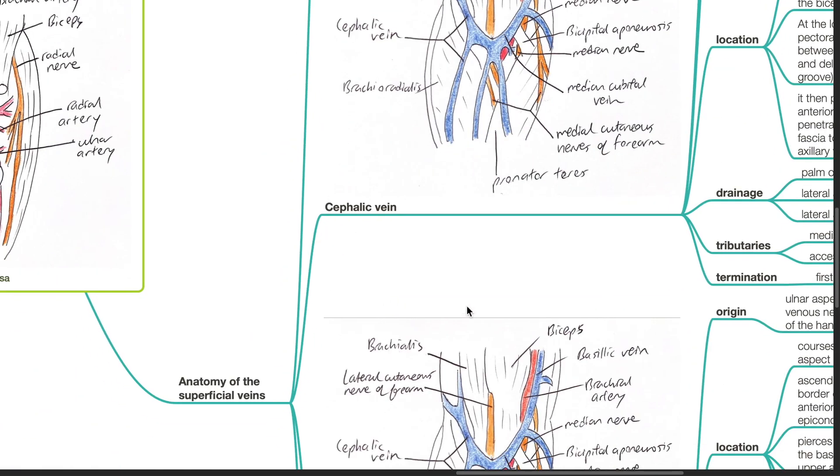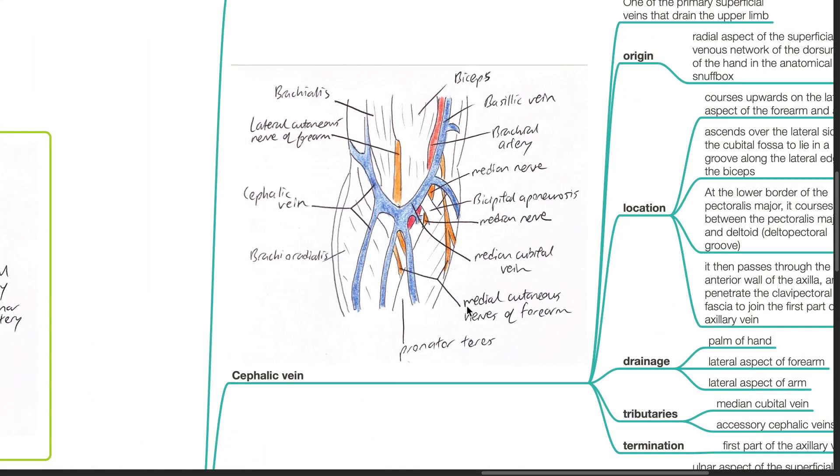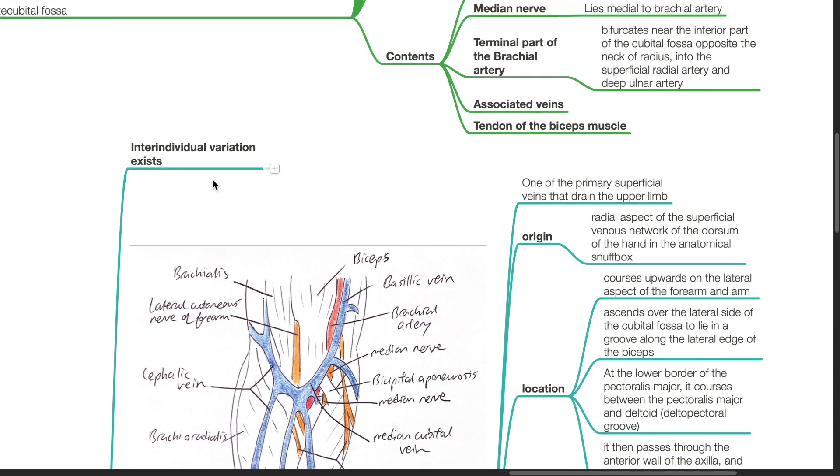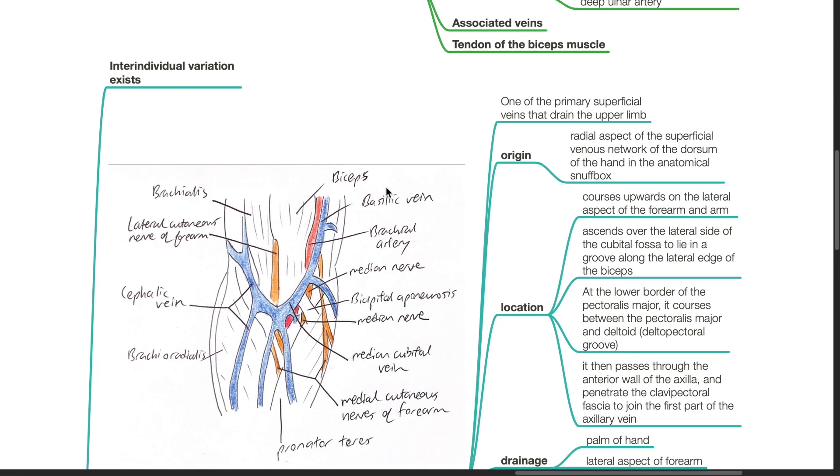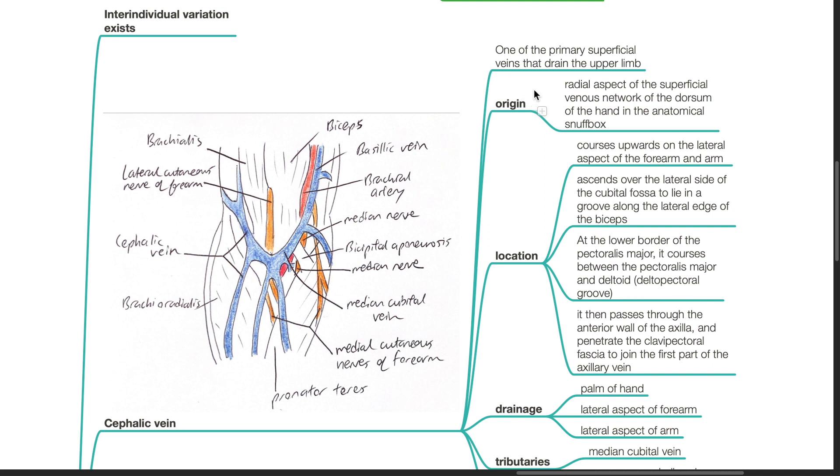Anatomy of the superficial veins over the cubital fossa. Inter-individual variation exists. The cephalic vein is one of the primary superficial veins that drain the upper limb. The origin is the radial aspect of the superficial venous network of the dorsum of the hand in the anatomical snuffbox.